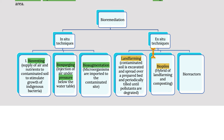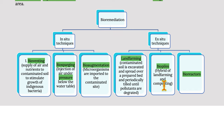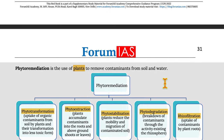Ex-situ techniques include land farming, biopiles, and bioreactors. In land farming, contaminated soil is excavated and spread over a prepared bed and periodically tilled until pollutants are degraded. Biopiles are a hybrid of land farming and composting.